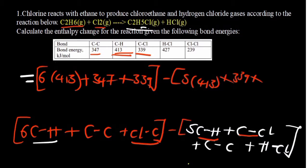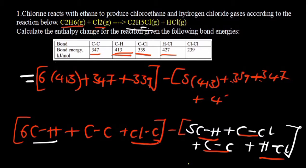Plus carbon to carbon which is 347. Plus hydrogen to chlorine which is 427. Note the correction: in the reactants side where we had 339, it's actually supposed to be 239 for chlorine to chlorine. So I'll correct that and put 239 there.